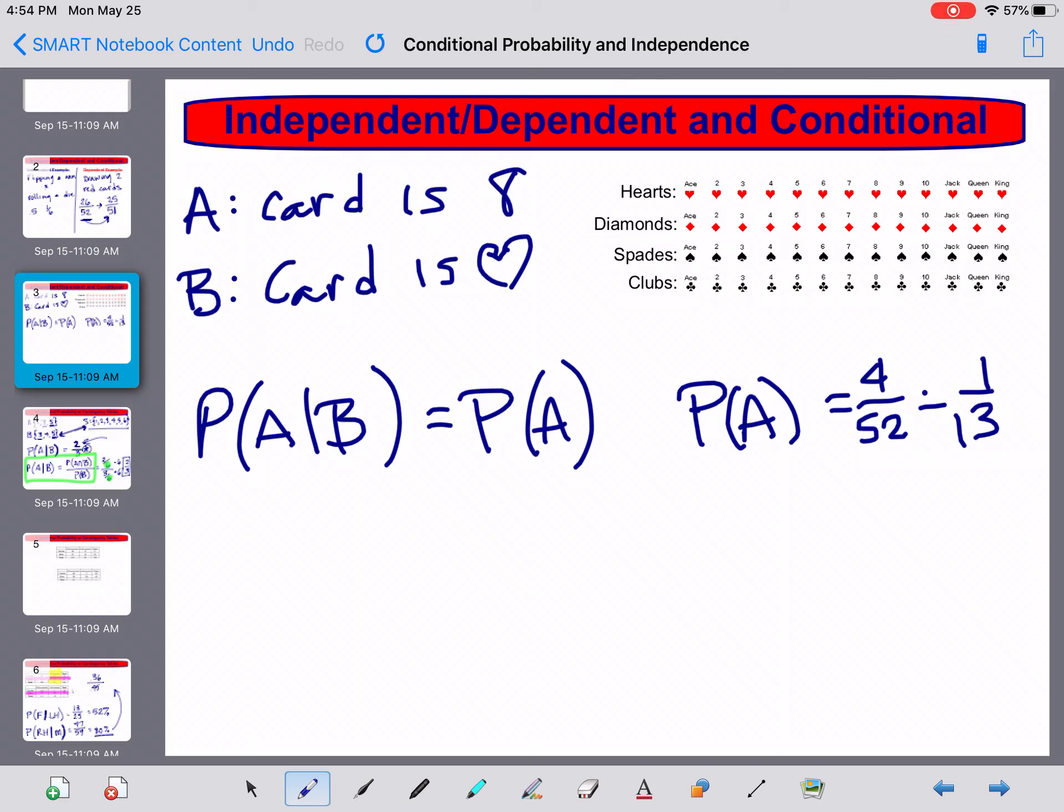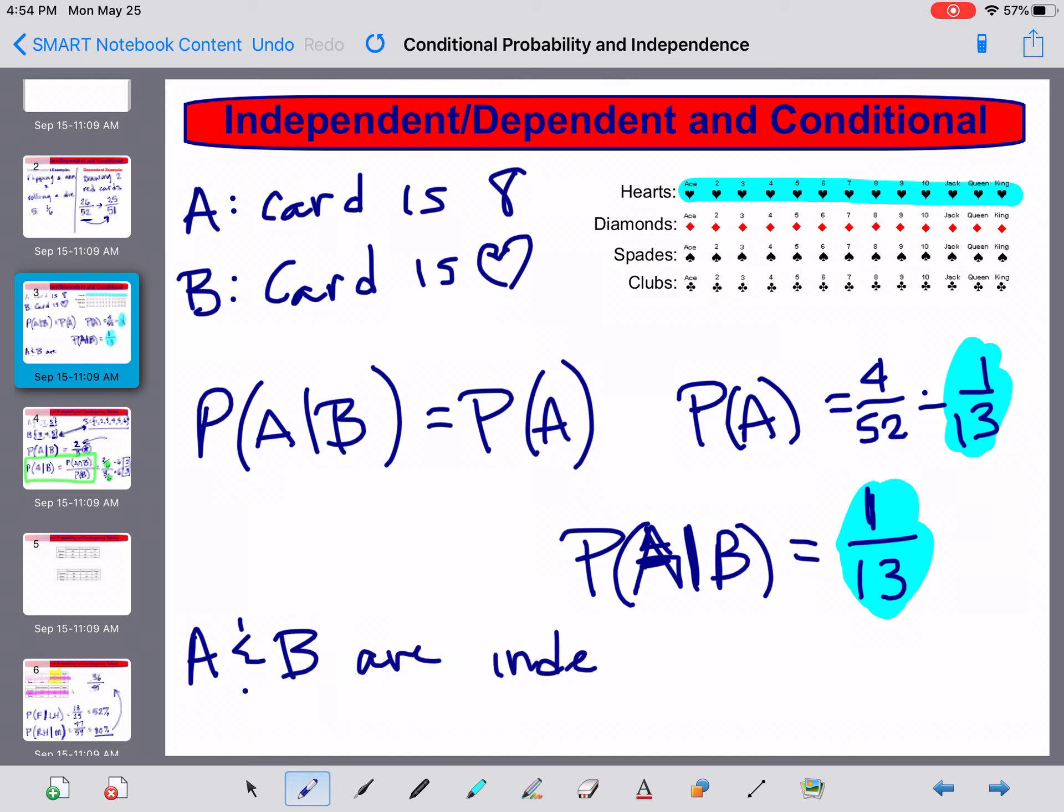So let's try that out. Probability of A given B. Well B, the card is a heart, that means that we're living in this place here, which means we only have 13 cards to choose from. Well, how many cards within that are an 8? Well, there's only one that shares that property. So that means now that we have these two things being both true, we know that A and B are independent events.